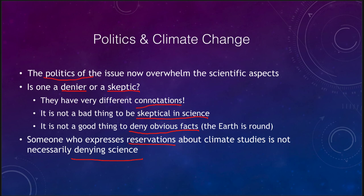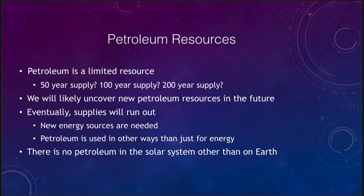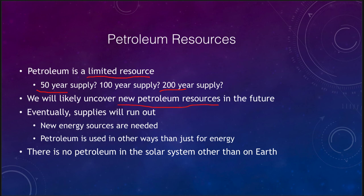One of the things that is part of this is petroleum resources. We see all sorts of various numbers — do we have a 50-year supply, 100, or 200 years? Classes back in the 1980s said we'd be out of petroleum by 2020, which doesn't seem like it is going to happen. But one important thing is that it is a limited resource. We will probably uncover new resources and access sources that were previously inaccessible, but eventually supplies will run out.